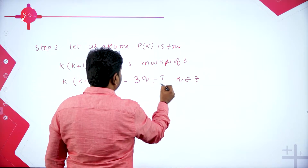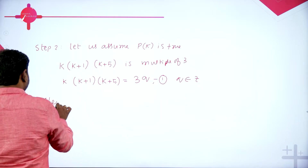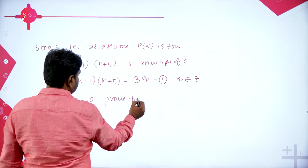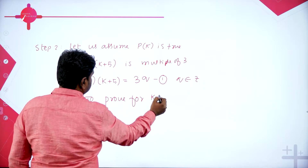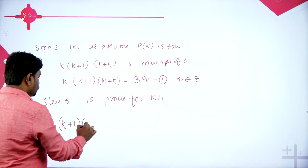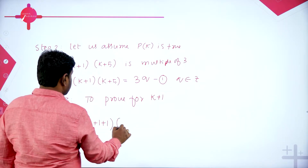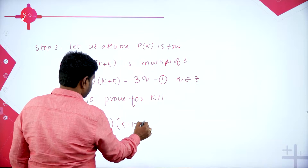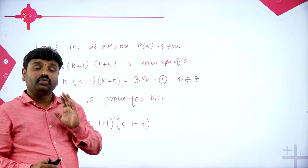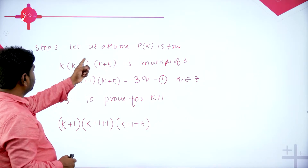Now we need to prove for k+1. Step 3: to prove for k+1, we will change k to k+1. So the expression becomes (k+1)(k+1+1)(k+1+5), that is (k+1)(k+2)(k+6). This product I should prove is a multiple of 3; then it will become true for k+1. By mathematical induction we can then conclude. So our task is to get k(k+1)(k+5) from this expression.